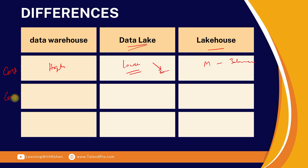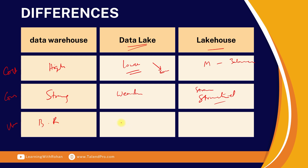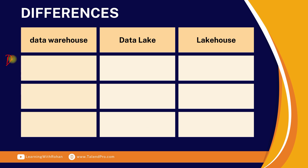On consistency, a data warehouse has very strong consistency. A data lake has weaker consistency, while a lakehouse has very strong consistency, especially for structured data. In terms of use cases, data warehouses are primarily used for business reporting; data lakes are used for data exploration, big data purposes, or analytical needs; and a lakehouse can be used for both analytical and operational purposes, since it stores data from transaction systems.